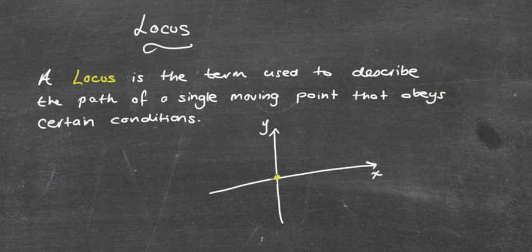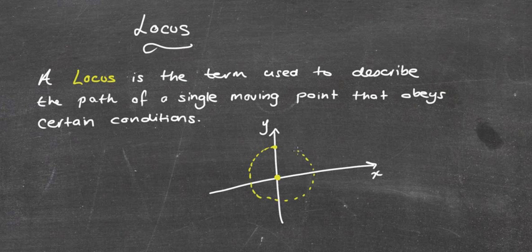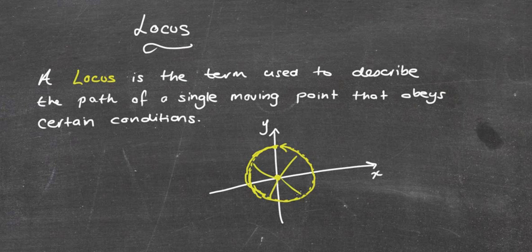For example, let's look at a situation where we might have a point that is always three units away from the origin. You can see that the path this point travels will end up making a circle. The locus is that path — the point moves all the way around so that path is always three units from zero: three there, three there, three there, etc.